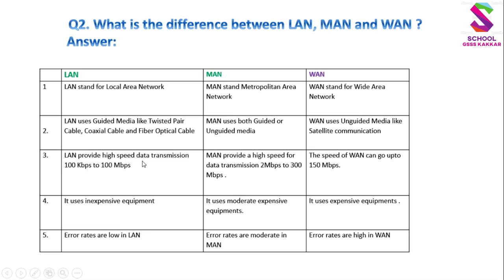तीसरा difference — Data Transmission Speed: LAN provides high speed data transmission — 100 kbps to 100 Mbps. MAN provides high speed data transmission — 2 Mbps to 300 Mbps. WAN की speed up to 150 Mbps तक जा सकती है।